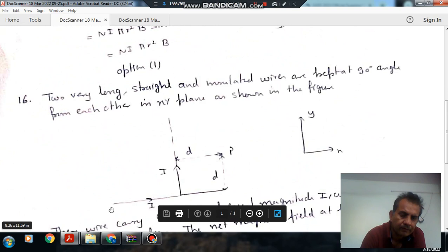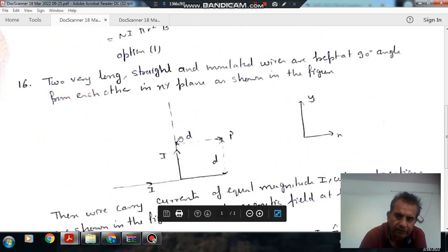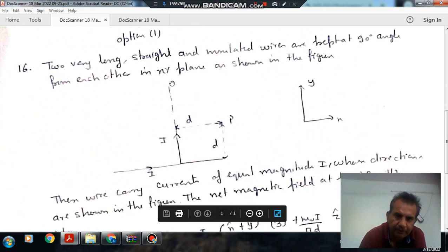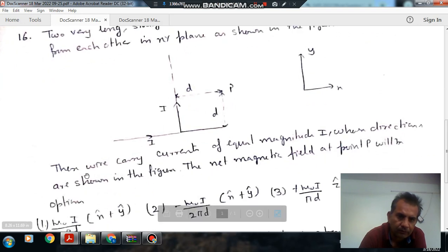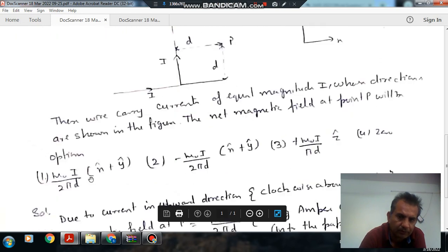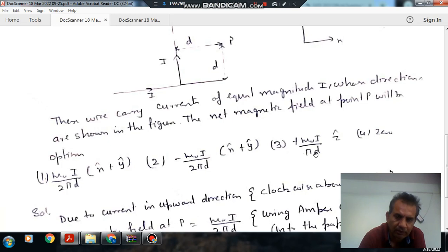Next, two very long straight and insulated wires are kept at 90 degrees from each other in the XY plane as shown in the figure. These wires carry current of equal magnitude I whose directions are shown. Net magnetic field at point P will be: options are (1) μ₀I/(2πD)(x̂ + ŷ), (2) -μ₀I/(2πD)(x̂ + ŷ), (3) μ₀I/(2πD)ẑ, (4) 0.